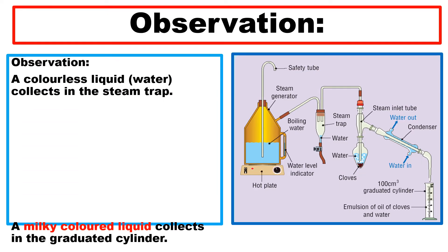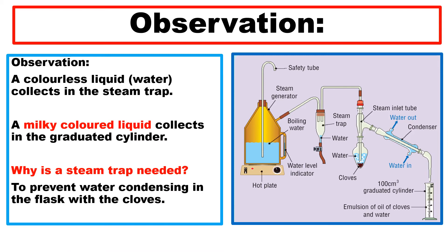After about 40 minutes, you will observe a colorless liquid — water — collecting in the steam trap, which is the middle part of the apparatus. A milky-colored liquid collects in the graduated cylinder at the bottom; that milky emulsion is a mixture of clove oil and water. The steam trap is needed to prevent water condensing in the flask with the cloves.